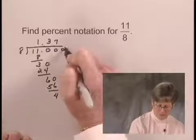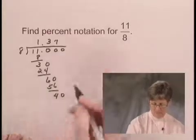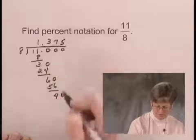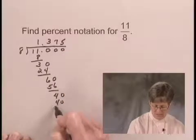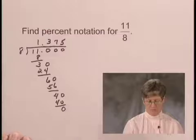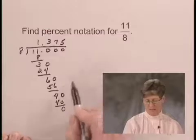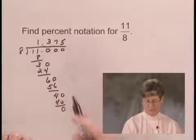We'll need another 0 up here. 8 goes into 40 5 times. 5 times 8 is 40, and the difference is 0, so we're finished. We know that decimal notation for 11 over 8 is 1.375.